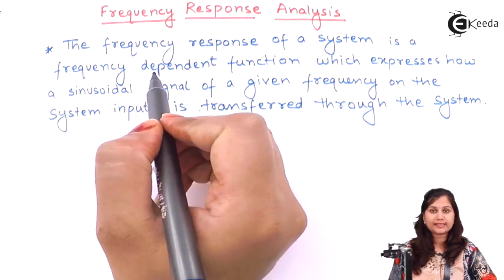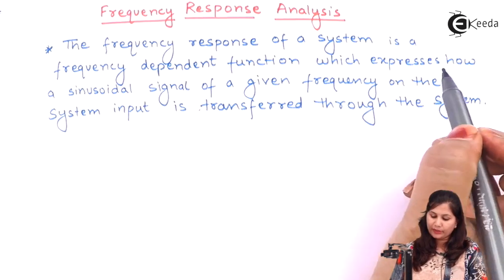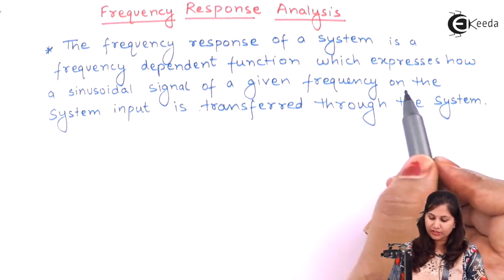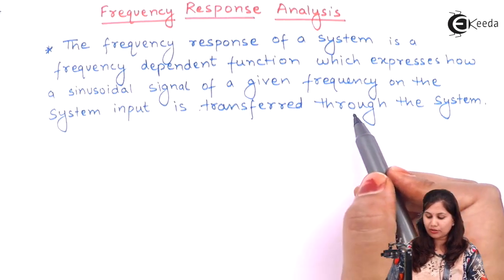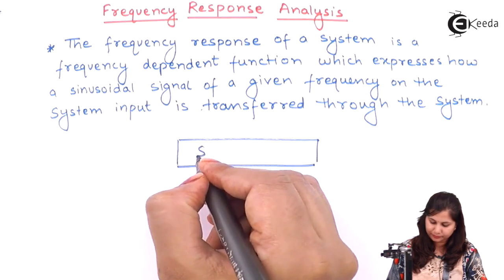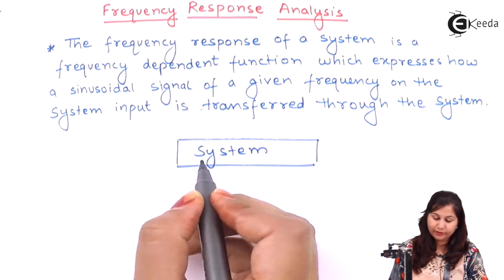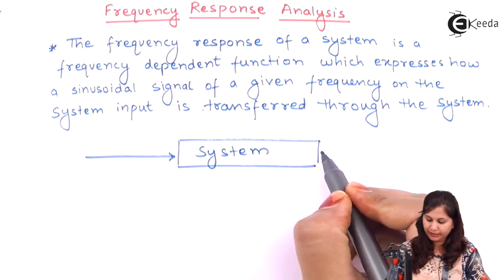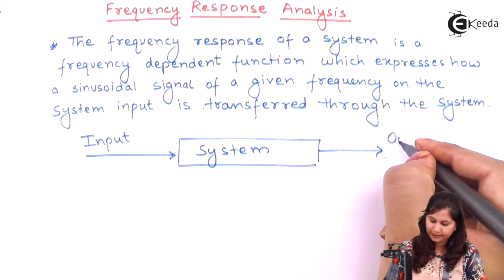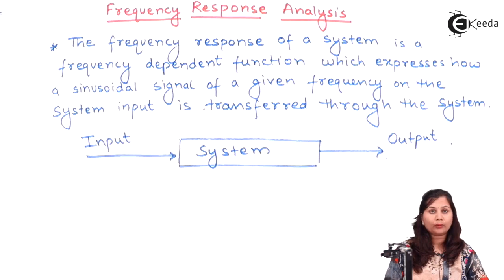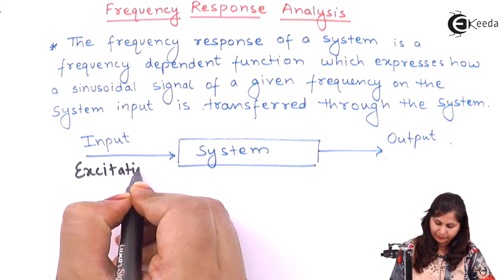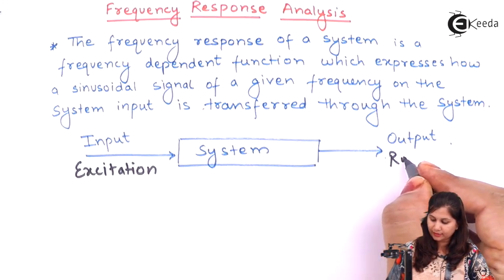It is a frequency dependent function which expresses how a sinusoidal signal of a given frequency, which is applied on the system input, is transferred through the system. This is a system, and to this system we apply an input and then we get an output. The input is also known as the excitation, and the output is also known as the response.